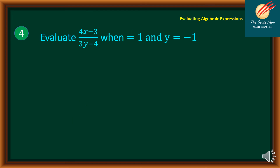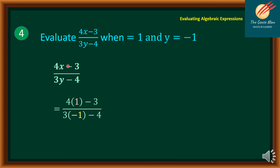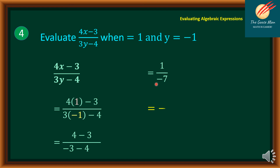Let's move on to example 4. This time we have two variables. Evaluate (4x − 3) divided by (3y − 4) when x equals 1 and y equals negative 1. Write down the expression 4x − 3 all over 3y − 4, then substitute: x equals 1 and y equals negative 1. Simplify: 4 times 1 gives 4 minus 3 in the numerator; 3 times negative 1 gives negative 3 minus 4 in the denominator. So we have 1 over negative 7. Since positive divided by negative gives negative, the final answer is negative 1 over 7.